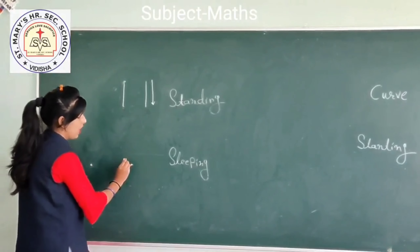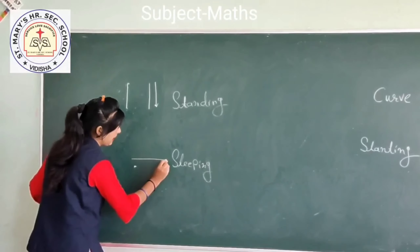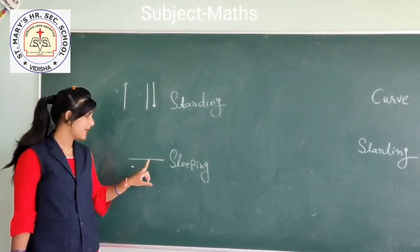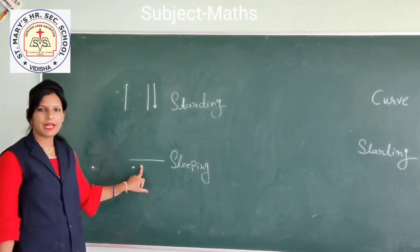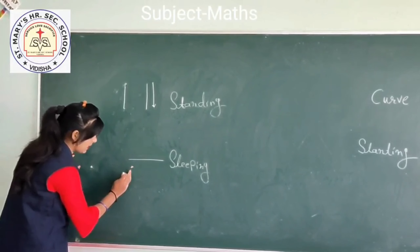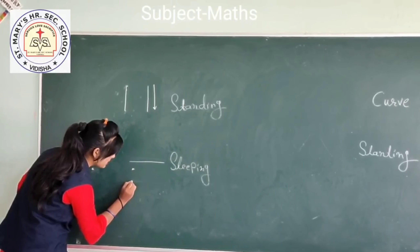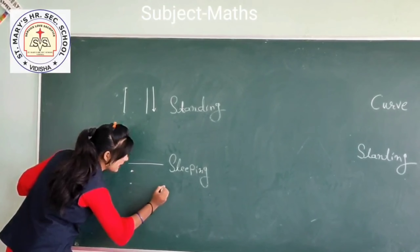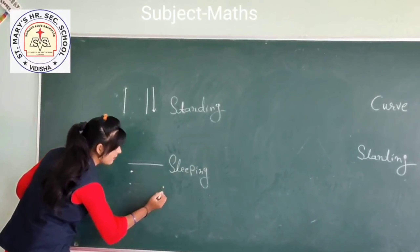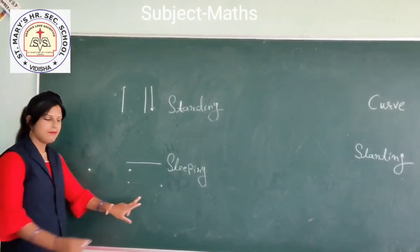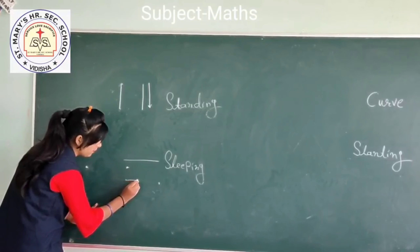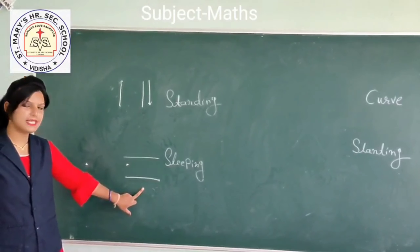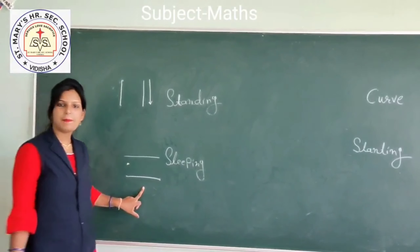Now our next line is the sleeping line. This is a sleeping line. We will do practice here. We will keep two points — right points and left points. On the right side and left side, we will keep two points and match them like this. It is a sleeping line.